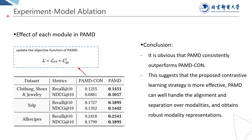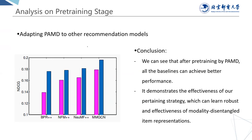In this experiment, we check whether PAMD can bring further improvement to other models. Specifically, based on the well-pre-trained modality representations on our recipes dataset, we directly apply them to other models by concatenating the four different representations together. We can see that after pre-training by PAMD, all the baselines achieve better performance. This demonstrates the effectiveness of our pre-training strategy, which can learn robust and effective modality disentangled item representations.